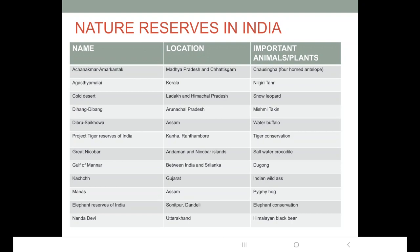The first is Ajanakmar Amarkandak nature reserve, located across two states: Madhya Pradesh and Chhattisgarh. This nature reserve is famous for the animal chausingha, also known as the four-horned antelope.